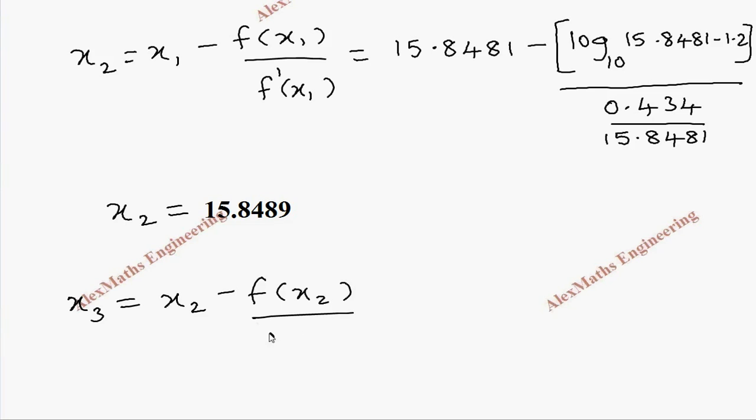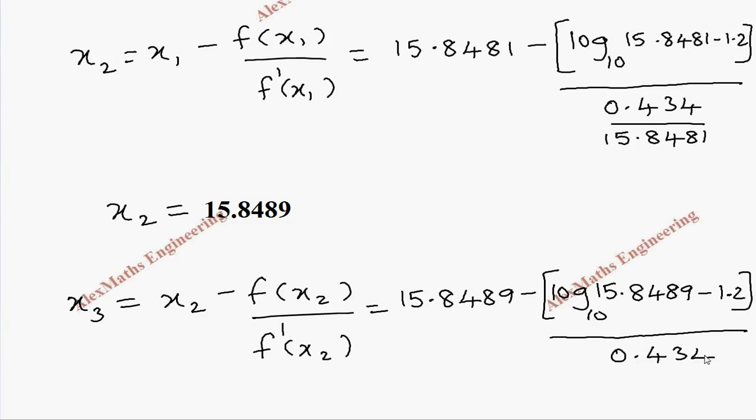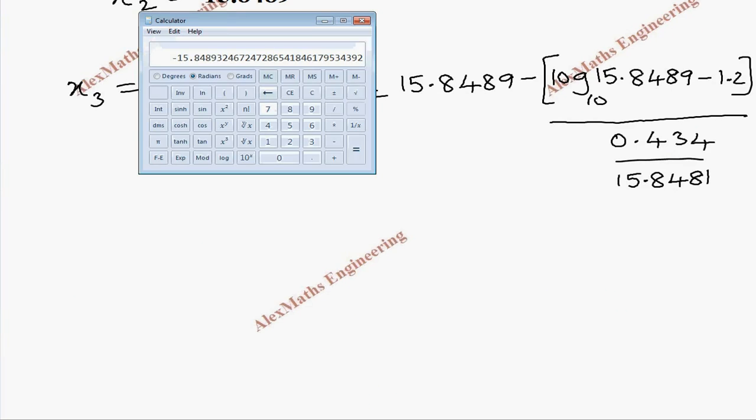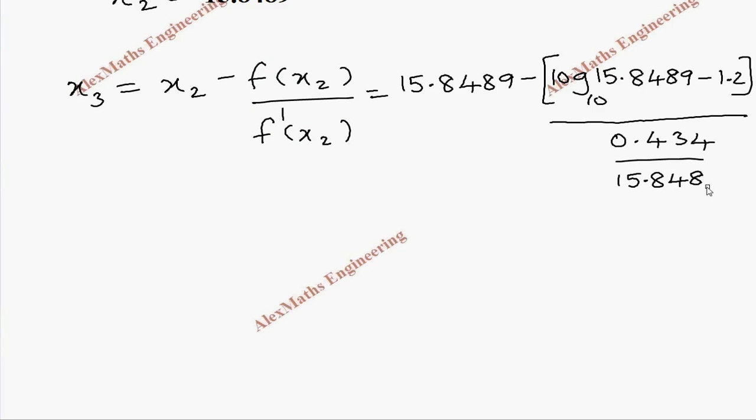In the same way, let's find x_3, which is x_2 minus f of x_2 divided by f dash of x_2. So this will be 15.8489 minus log of 15.8489 with base 10 minus 1.2 whole divided by 0.434 divided by 15.8489. Now coming to the calculation part, we take calculator here: 15.8489 log of that minus 1.2, we got the numerator part, divided by bracket open 0.434 divided by 15.8489.